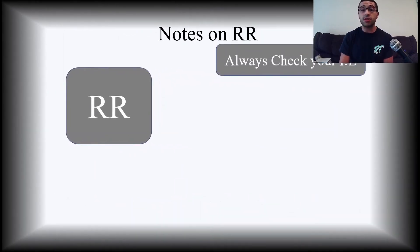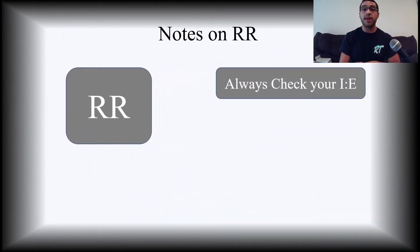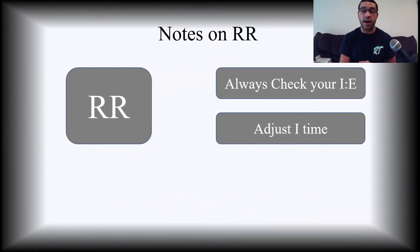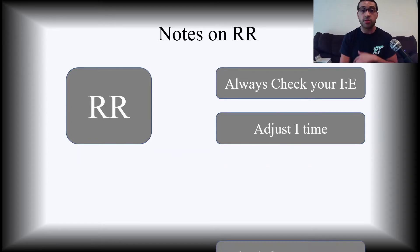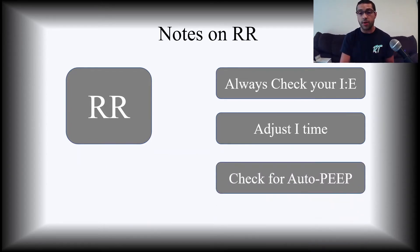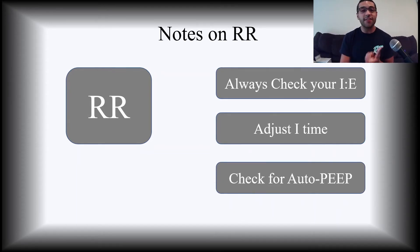Some notes on respiratory rate: don't forget to check your I-to-E ratio. Adjust the I-time accordingly to ensure your patient has enough expiratory time so they don't auto-PEEP. Always check for auto-PEEP — do your expiratory holds and see where your actual PEEP level is.